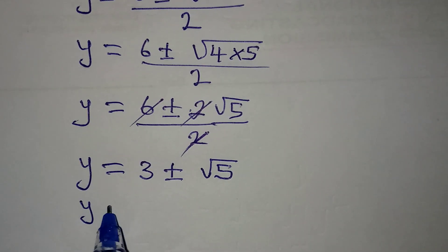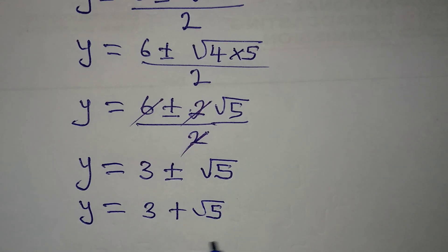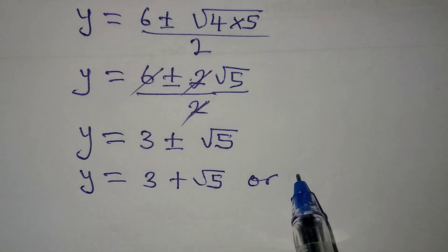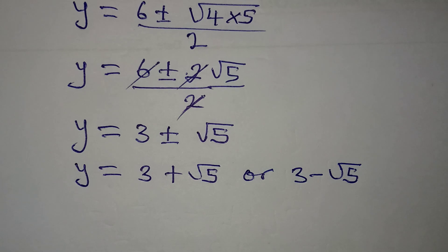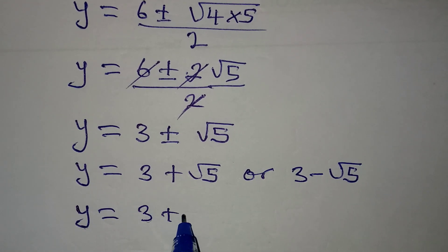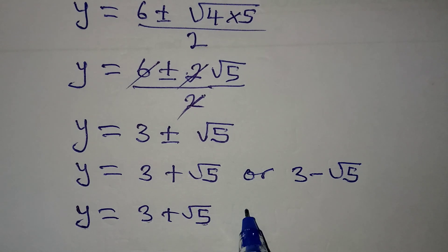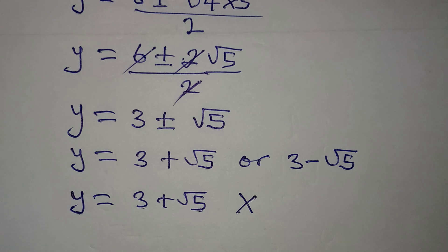Now this means that y is equal to 3 + √5 or 3 - √5. So this is what we have. But then if you want to check to know whether you're right or wrong and you work with y equal to 3 + √5, the equation will not be balanced on the two sides.